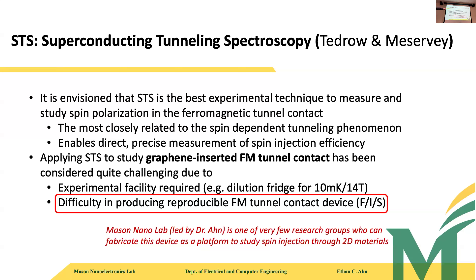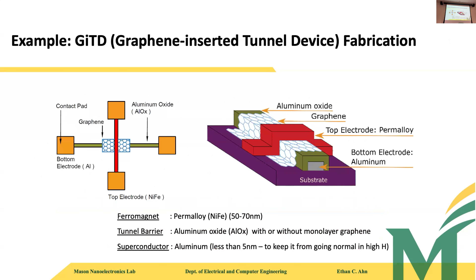My group is one of very few who can make this kind of device to study spin injection through 2D materials. If the tunnel barrier is graphene or another 2D material, this platform lets us study whether and how much it helps. This involves a complex nanofabrication process. The device is a ferromagnet–insulator–superconductor structure using aluminum as the superconductor, graphene as the barrier, and nickel-iron (permalloy) as the top ferromagnetic electrode.